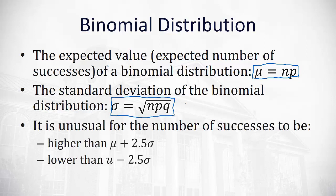These values are really useful to help us identify when we have an unusual number of successes. We're going to define an unusual number of successes as having more than two and a half standard deviations above the mean or two and a half standard deviations below the mean.